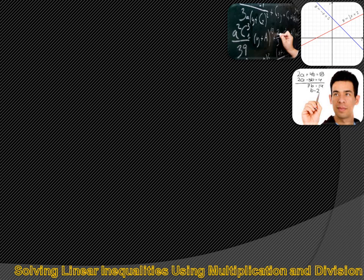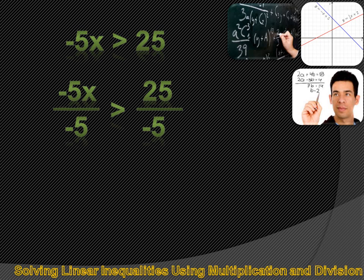Here's how this works when solving a linear inequality. If minus 5x is greater than 25 and we want to solve for x, we divide both sides of the inequality by minus 5. When we do that, we have to turn the inequality sign around because we've divided by a negative number. Dividing both sides by negative 5, we get x is less than negative 5.